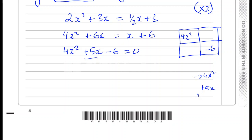24 and 1, no. 6 and 2, no. I have 3 and 8. 3 times 8 is 24, yes. So 3 times 8 is 24. They both have to have different signs, so it's going to be plus 8x and minus 3x. These two numbers multiply to give you minus 24x squared, and they add to give me plus 5x. So this can be factorized.